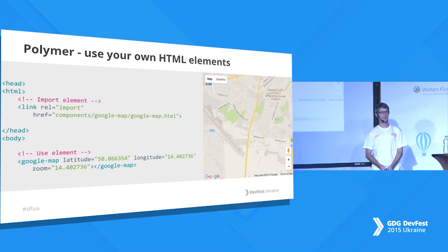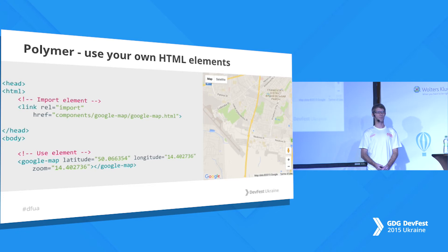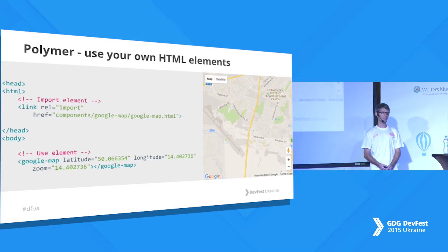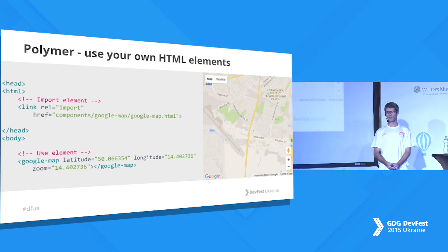It's really simple. If you have used Google Maps on your web page, you know that you need to use CSS files, JavaScript files, and include all this stuff. But with Polymer it's really simple — you can just import your element and use it in two lines.